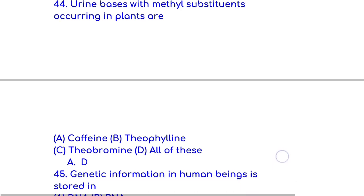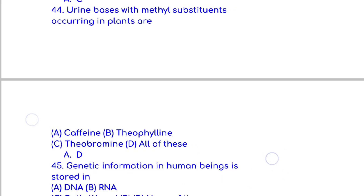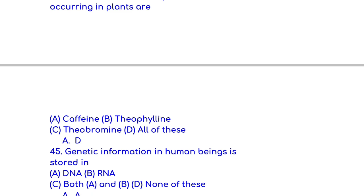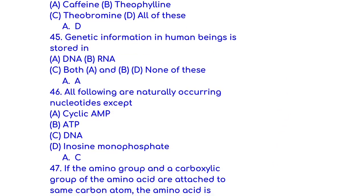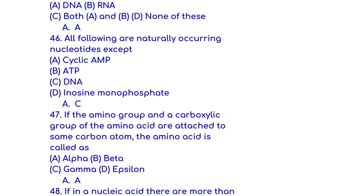Purine bases with methyl substituents occurring in plants are caffeine, theophylline, and theobromine. Genetic information in human beings is stored in DNA. All following are naturally occurring nucleotides except DNA.